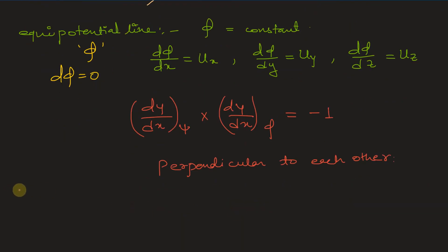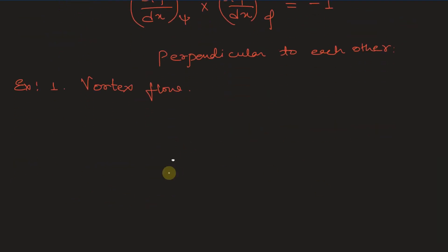For example, consider vortex flow. For a point vortex, the streamlines are circular, and the potential lines can be drawn radially from the point vortex.